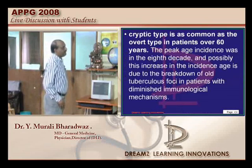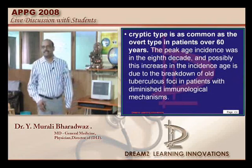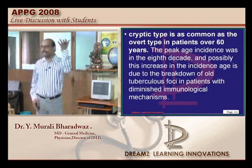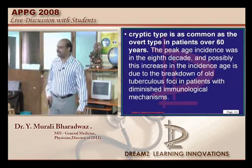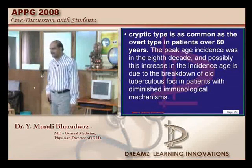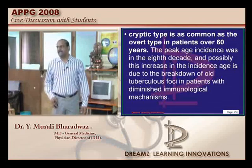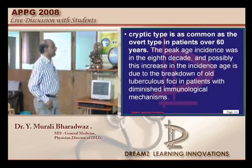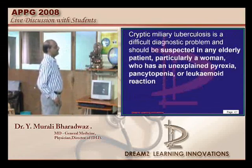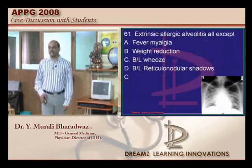Low-grade fever and weight loss are the presenting features of cryptic miliary TB, and it is more common in the elderly — geriatric population — not those less than 40 years of age. So A becomes the answer here.